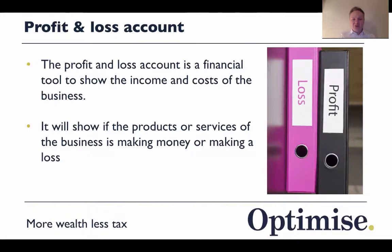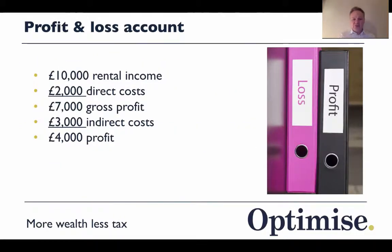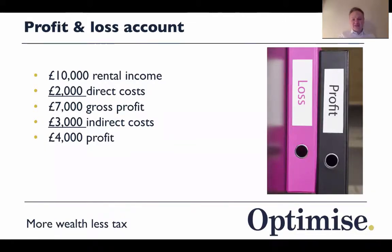If you don't keep your online bookkeeping systems up to date monthly, you won't know if you're making a profit, and burying your head isn't going to help at all. I've taken this from the perspective of a rental business: ten thousand pounds of rental income, two thousand pounds of direct costs, gives you a gross profit of seven thousand. With three thousand pounds of indirect costs, you have four thousand pounds of profit — a healthy result.